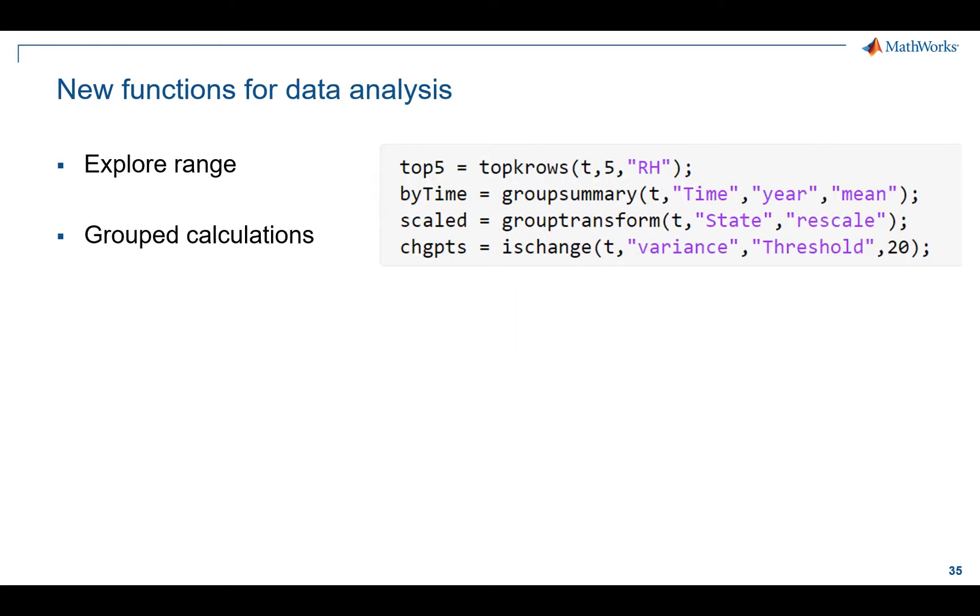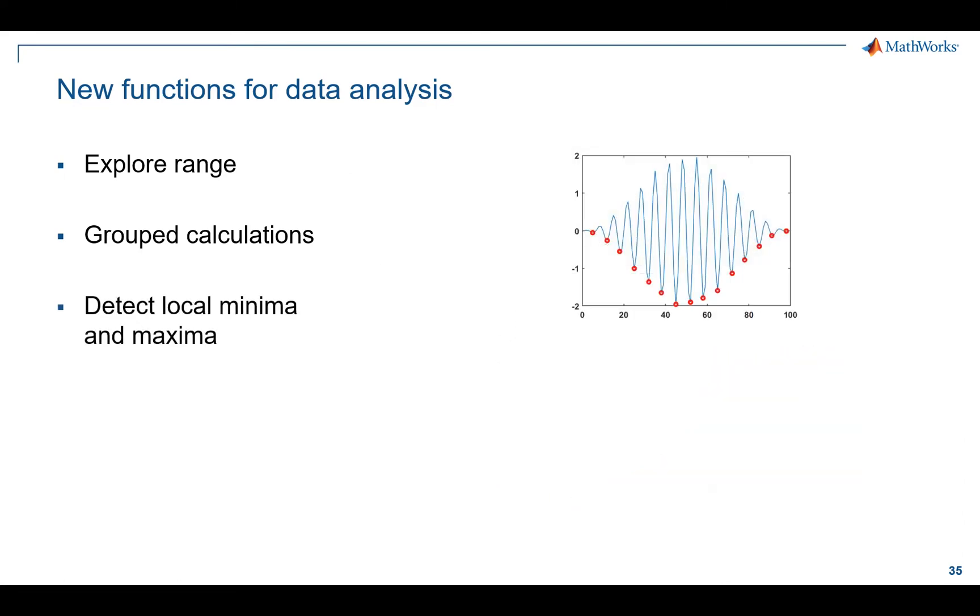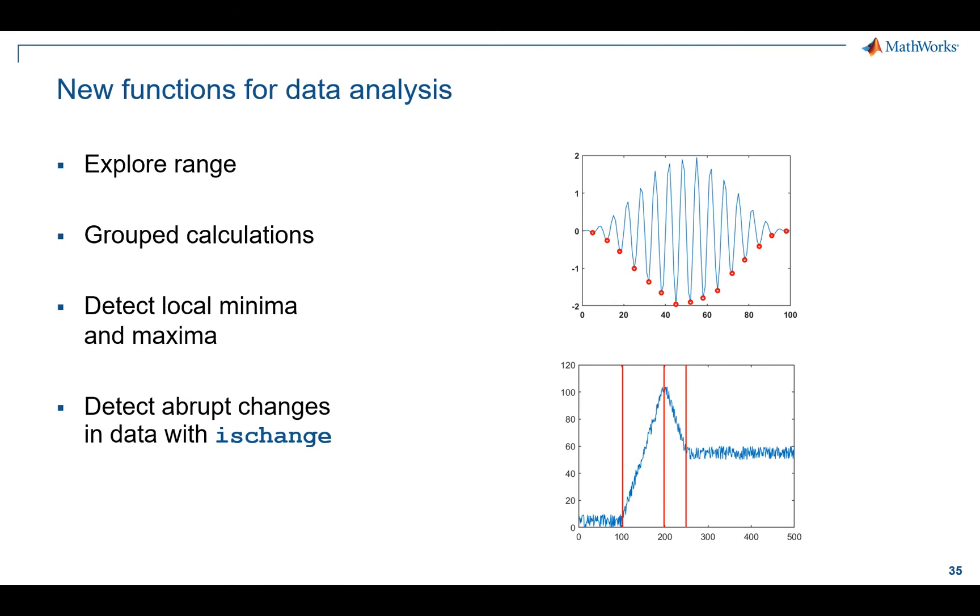Grouping is a big deal. We have lots of groups, whether it's part numbers or group by time, by week, by month, by day, and so forth. There's new functions like groupsummary and grouptransform that allow you to do this grouping work right out of the box. What about detecting change points? A couple of functions here: ischange and islocalmin, islocalmax, that type of thing. These can be very useful just early on in our discovery process when we're trying to identify what's going on with our data.